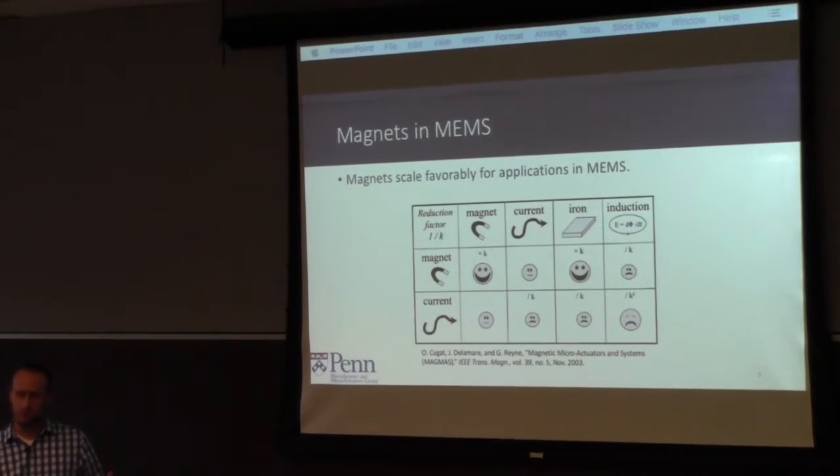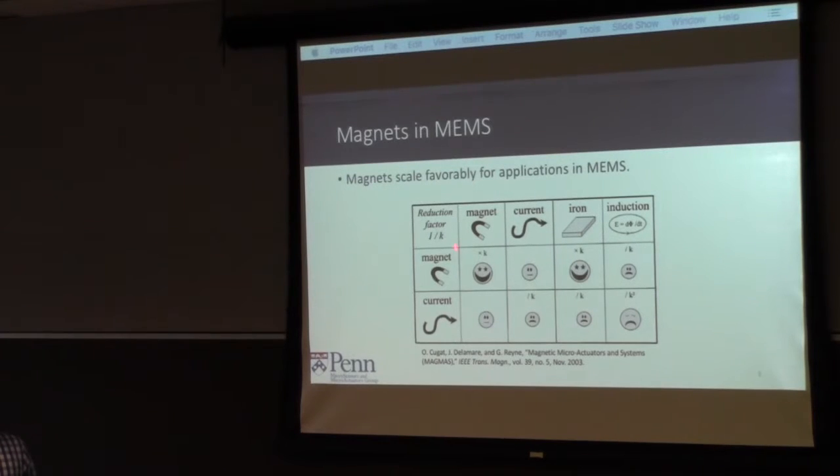You can see this quality chart here. They scale really well as the dimensions of the magnet go down, especially compared to currents in electrical conductors because that copper, whatever metal it is, can only handle so much current. As you shrink these magnets down, their interactions with other magnetic materials actually improves.